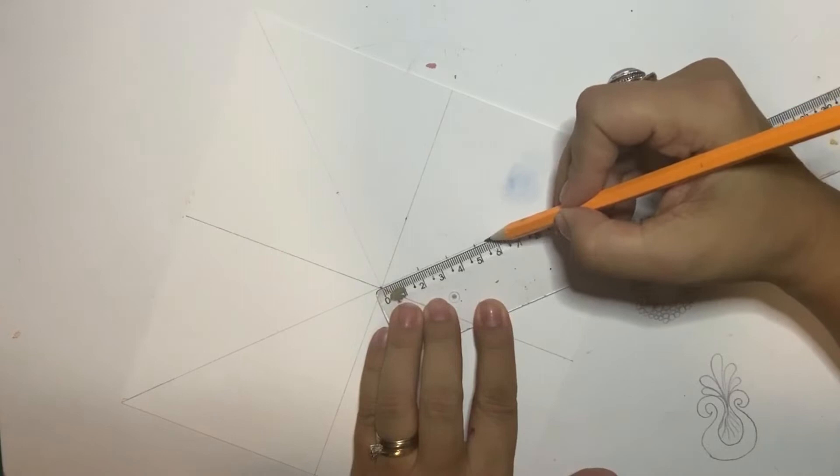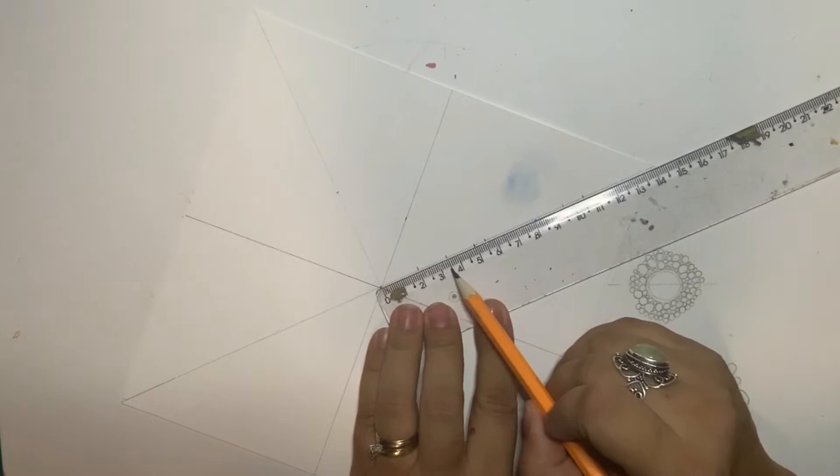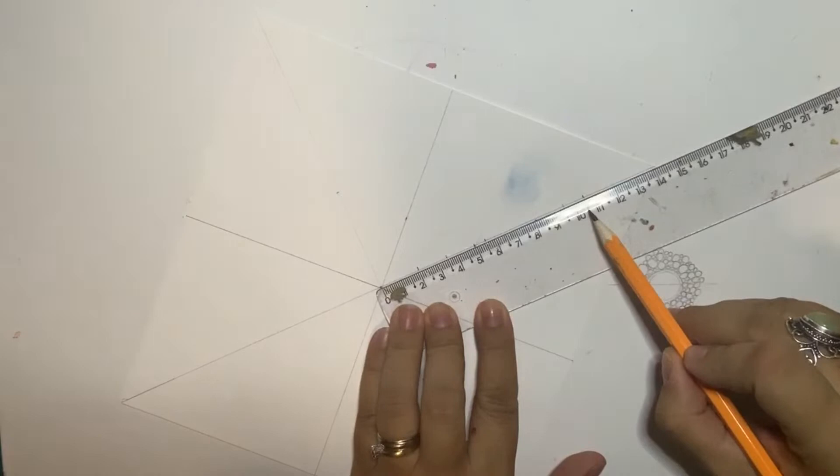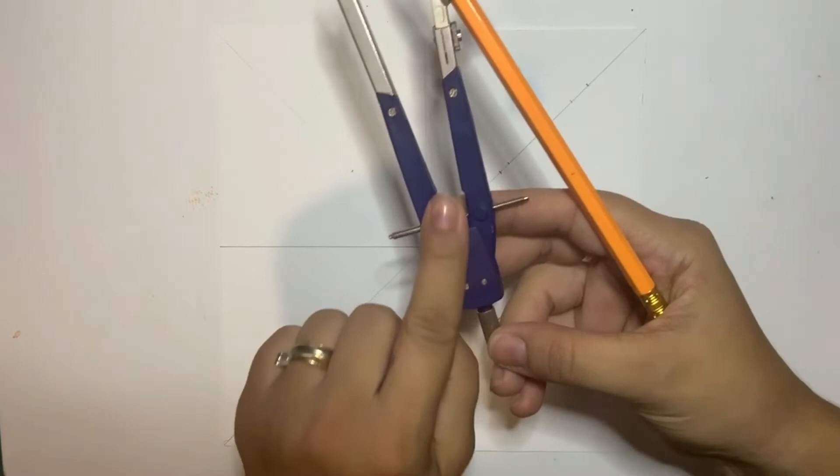I'm just going to make marks at two centimeters, 3.5 centimeters, 5.5 centimeters, 9.5 centimeters, and 10.5 centimeters. This is very intuitive. Of course I've designed already the mandala so I know the distances, but you can make marks as you like every centimeter.